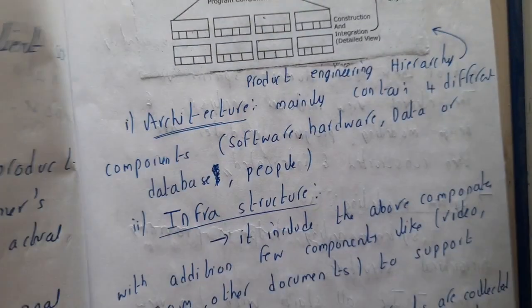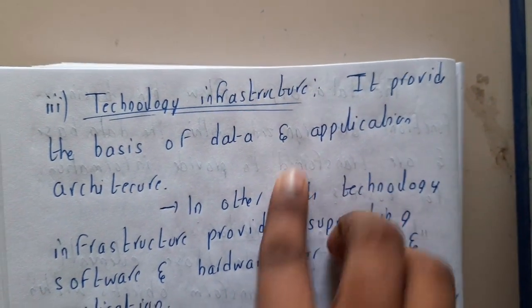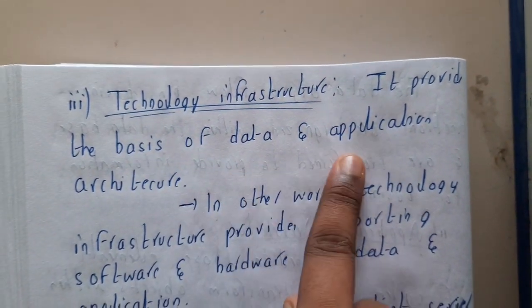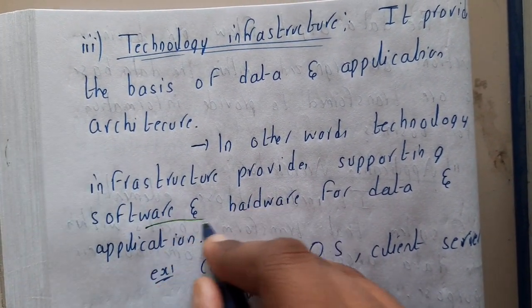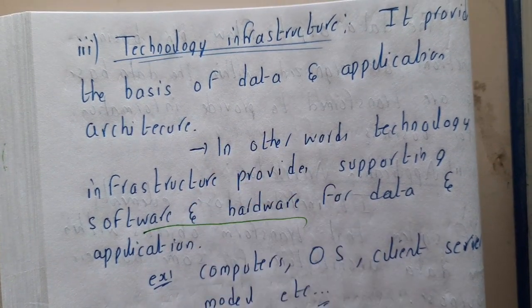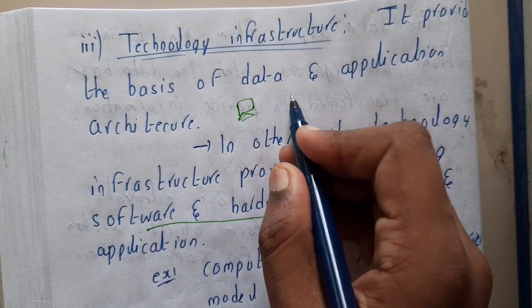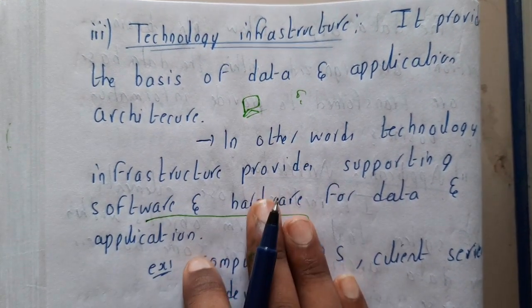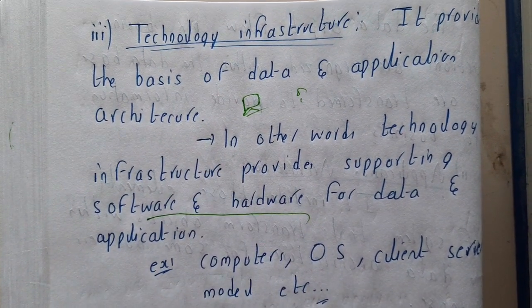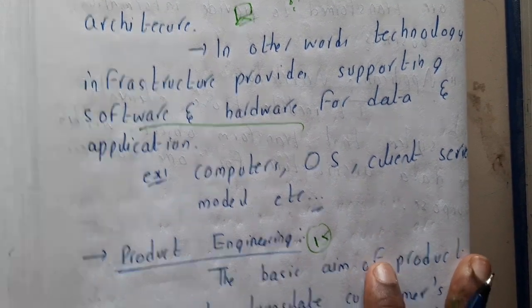Technical infrastructure provides the basis of data and application architecture. In other words, technical infrastructure provides the support for software and hardware — how the software and hardware will interact with the data. Examples include the client-server architecture, operating system, and computer architecture. These are the technologies and infrastructures we deal with here.